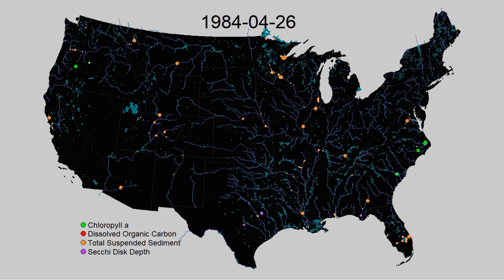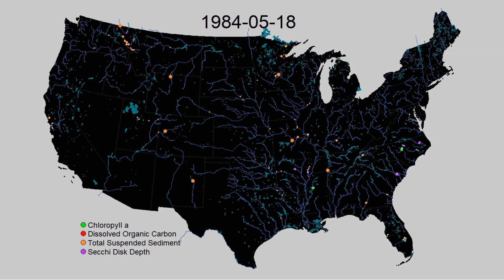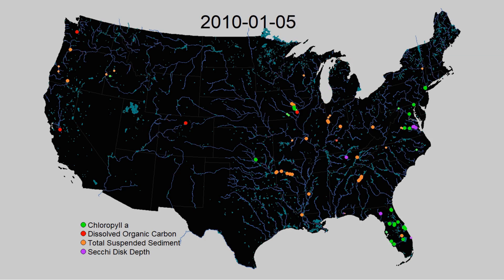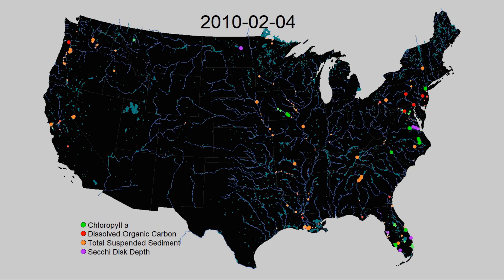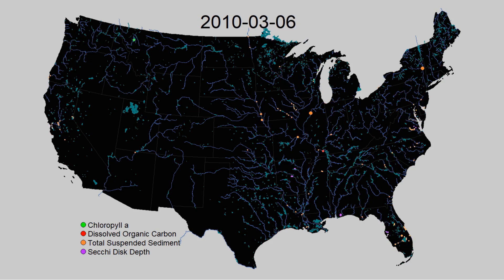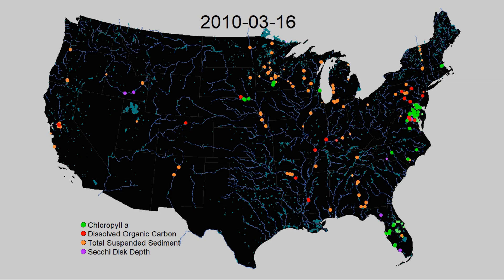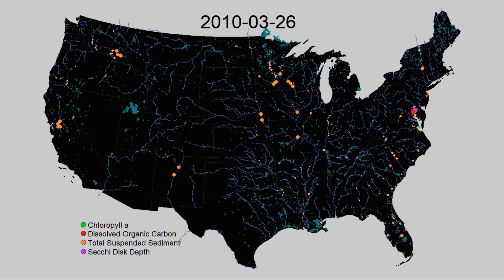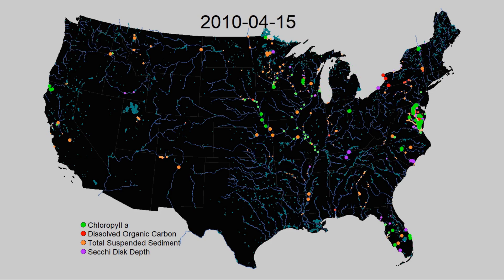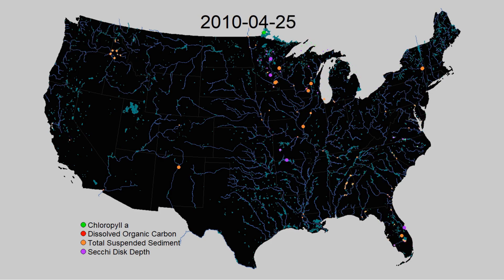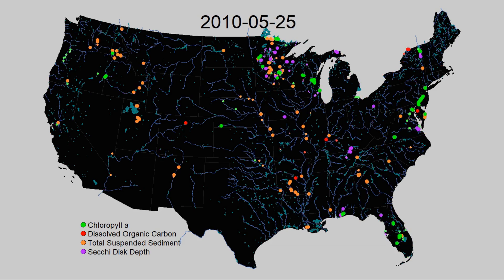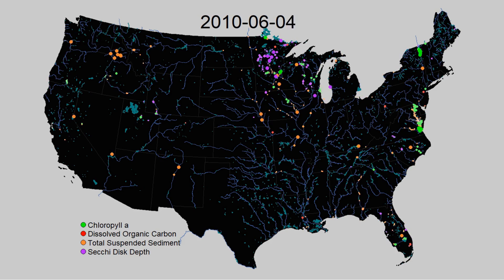Here we focus on Chlorophyll A, which can tell us how much algae is in a water body; Dissolved Organic Carbon, which tells us how much carbon has leached from forests and grasslands into streams and lakes; Total Suspended Sediment; and Secchi disk depth, a measure of water clarity. Collecting these data is an expensive process that limits our ability to fully understand how our water quality is changing at regional and continental scales.